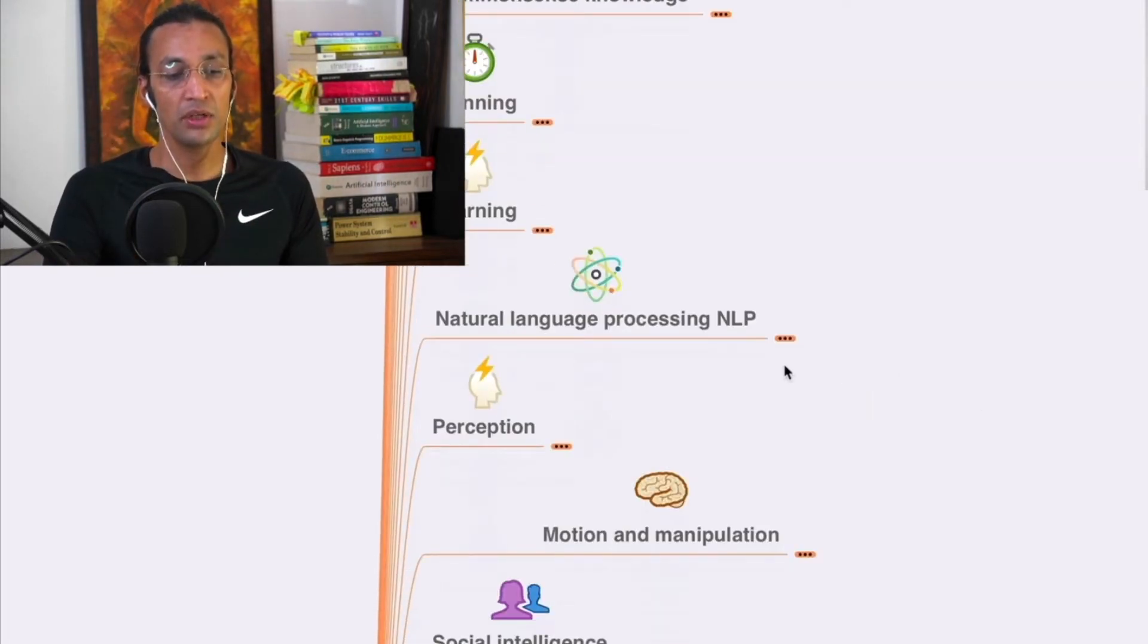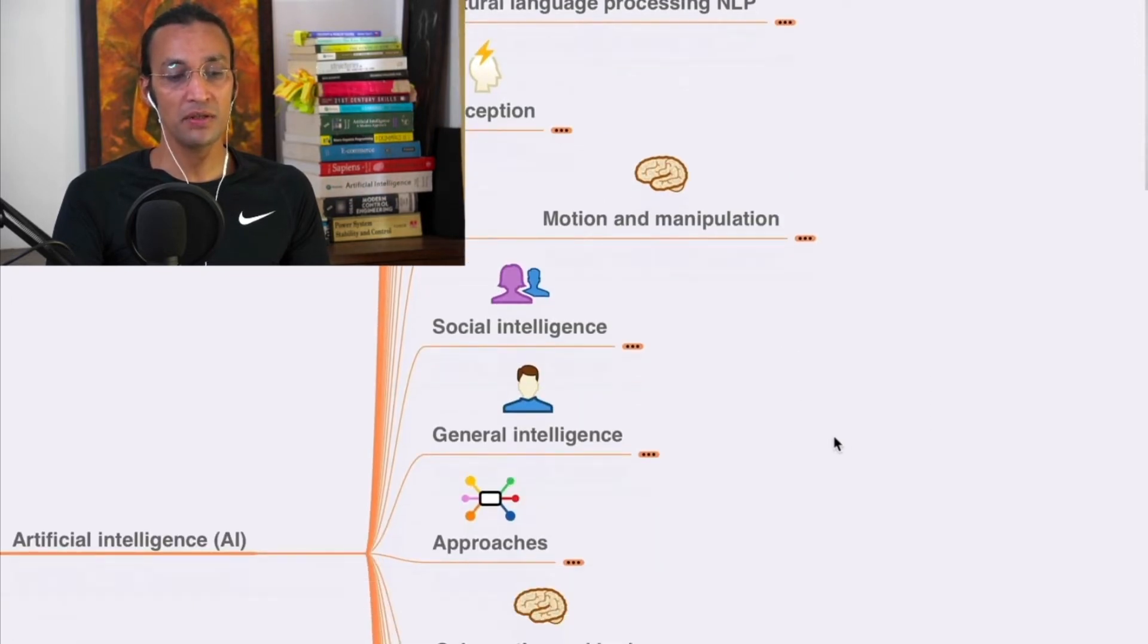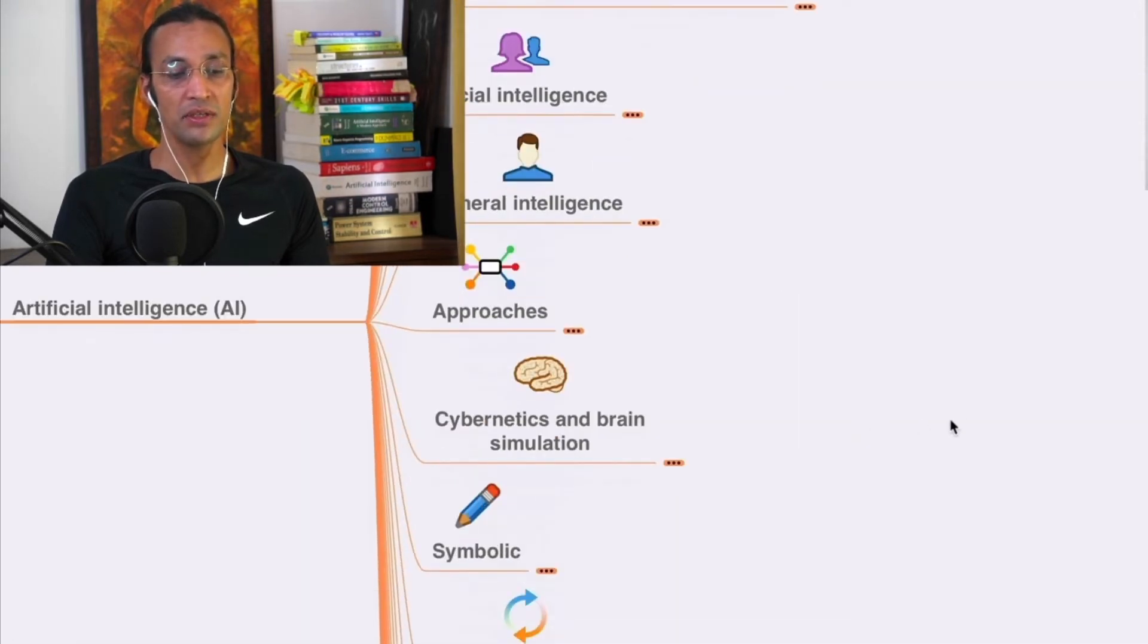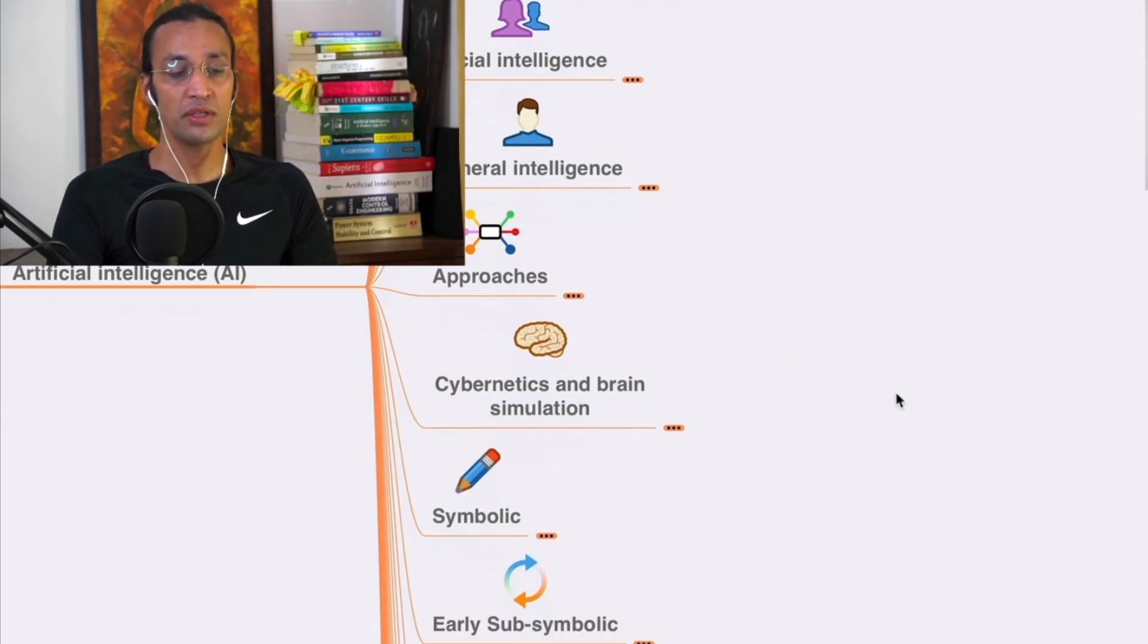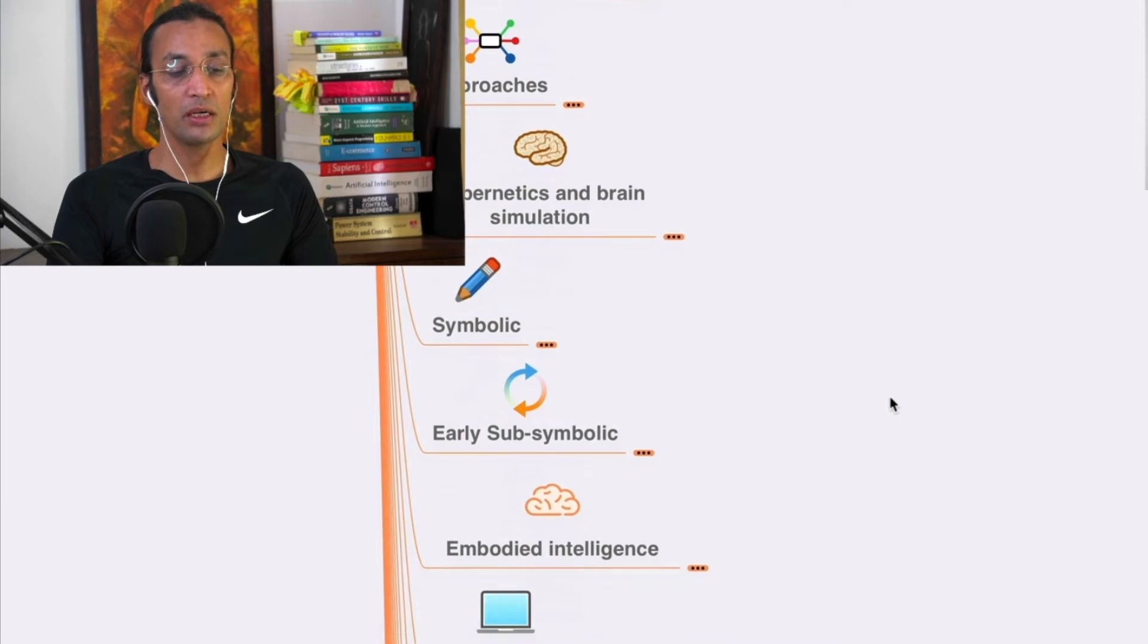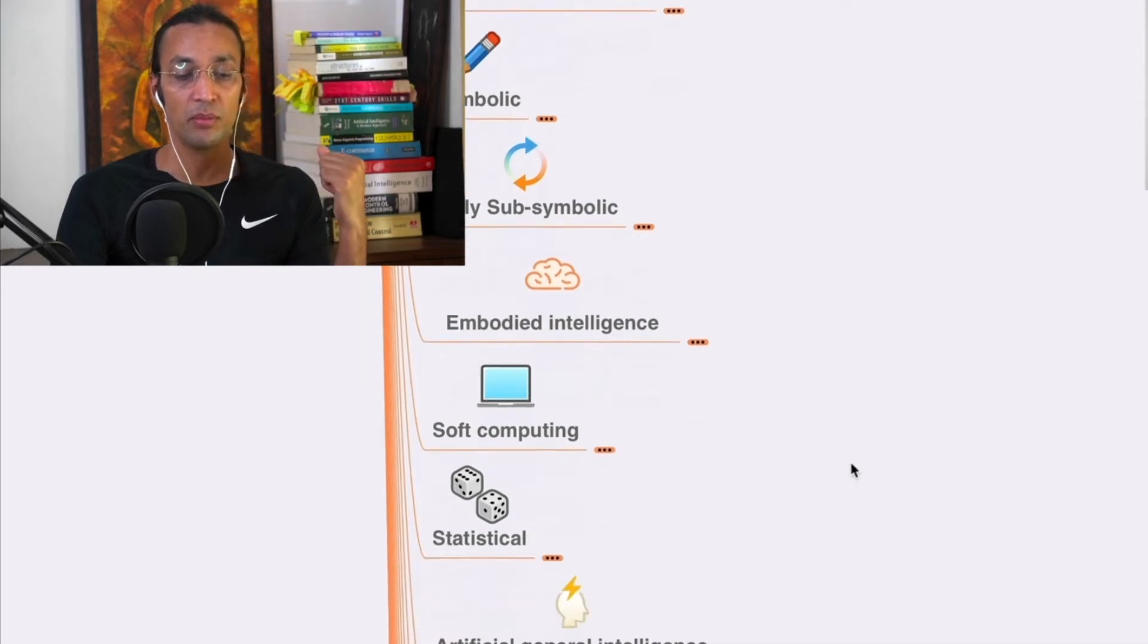We'll cover neural networks, natural language processing (NLP), perception, motion and manipulation, social intelligence, general intelligence approaches, cybernetics and brain simulation, symbolic approaches, early sub-symbolic approaches, embodied intelligence, and soft computing.